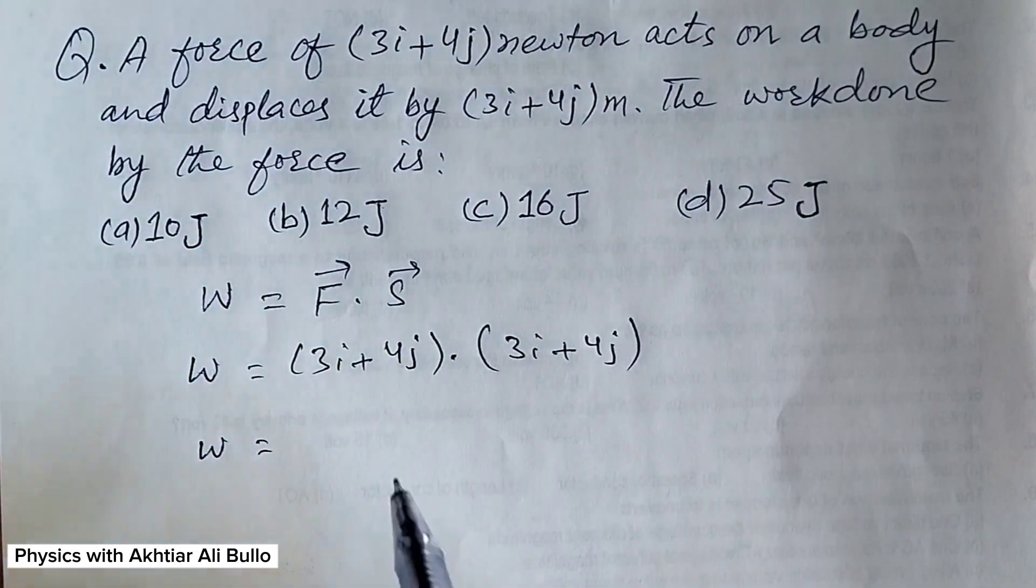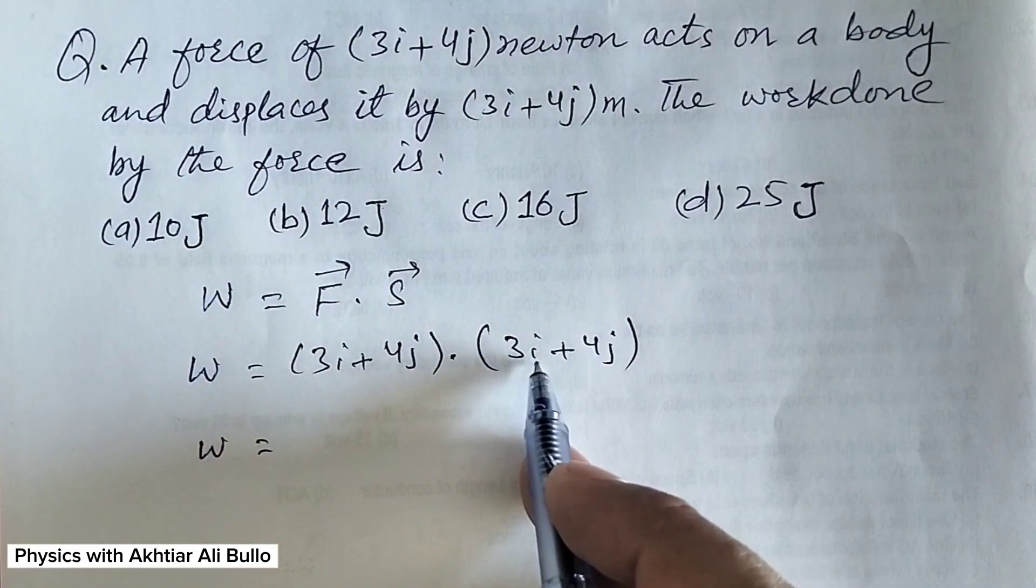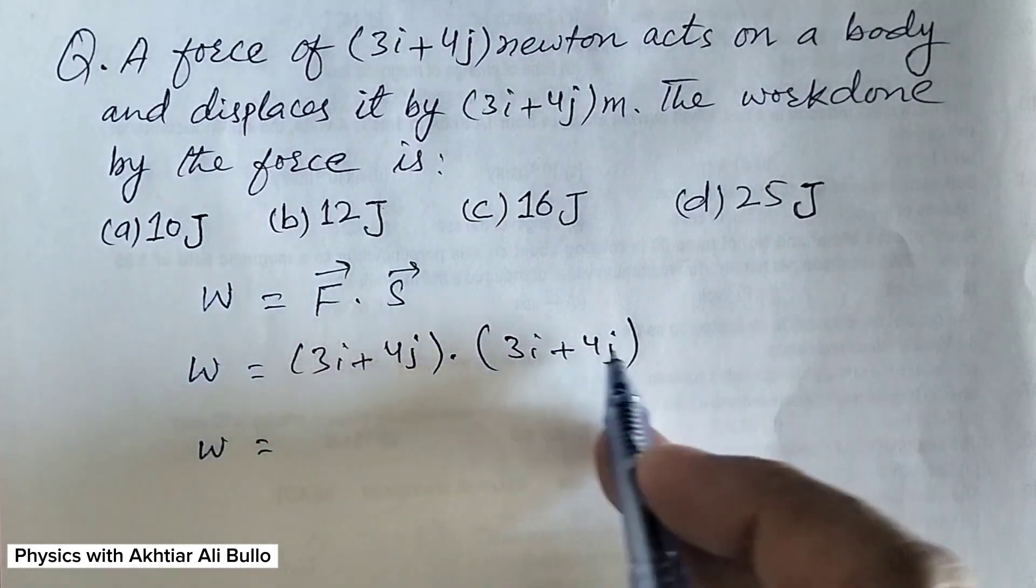So work done will be equal to: we will multiply the value of i with i and the value of j with j.